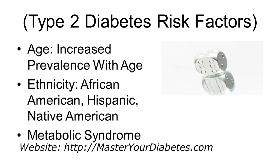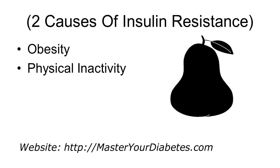Ethnicity is another factor — being African American, Hispanic, or Native American puts you at higher risk. Metabolic syndrome refers to a group of conditions such as high blood sugar, lipid abnormalities, dyslipidemia, hypertension, inflammation, and other non-lipid abnormalities, which increase a person's risk of cardiovascular disease.